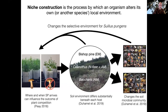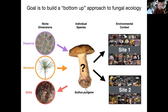This of course changes the feedback and the fitness landscape for Suellis pungens itself. Hopefully I've convinced you that this bottom-up approach is an interesting and useful way to think about fungal communities, and that a deep dive into the ecology of a single species can actually help us make better broad generalizations about what's driving community assembly for the entire fungal community.